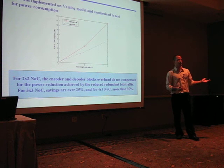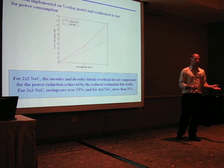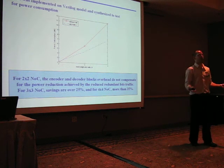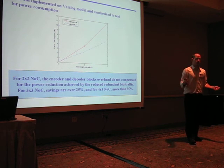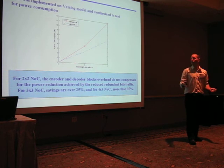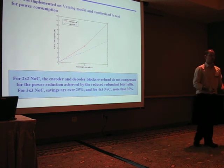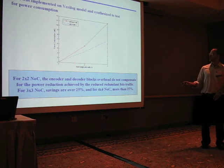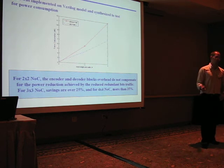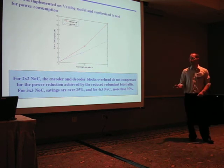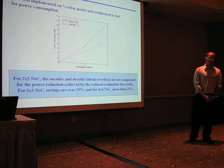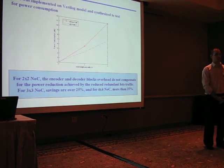What about the power? On one hand, we save parity bits transmission and therefore we save power. On the other hand, we need to insert parity routing encoder and decoder modules into the NOC, so we would like to know the overall results. We denote the total power consumption of the encoder and decoder parity routing modules plus the savings of the redundant parity bits.